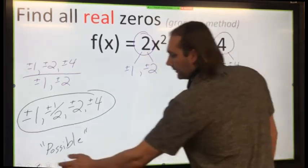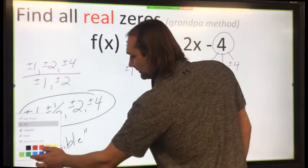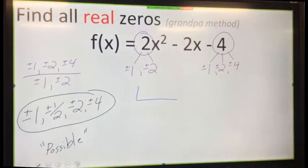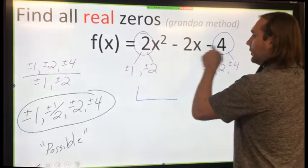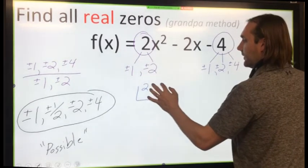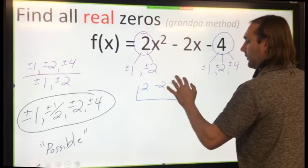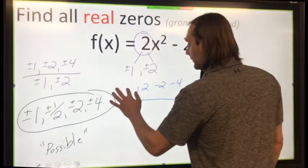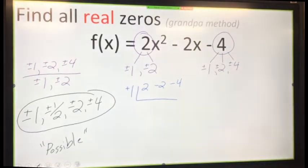So let's use synthetic division because that's the much easier method. I prefer long division. Really? Yes, I actually do prefer long division. Why? I don't know. Well, I'm going to use synthetic division because it's quicker. So let me take my coefficients here: 2, -2, and -4. And I'm going to start off with +1.